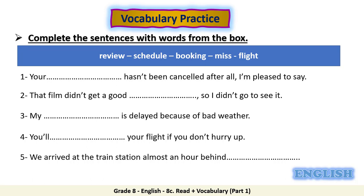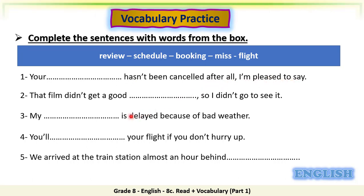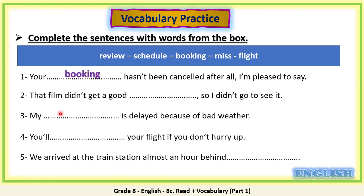Welcome back, my dear students. Now let's check your answers. The words in the box are: Review, Schedule, Booking, Miss, Flight. Number one: 'Your booking hasn't been cancelled after all, I'm pleased to say.' Number two: 'That film didn't get a good review, so I didn't go to see it.' Number three: 'My flight is delayed because of bad weather.' Number four: 'You'll miss your flight if you don't hurry up.' Number five: 'We arrived at the train station almost an hour behind schedule.'